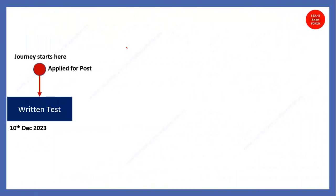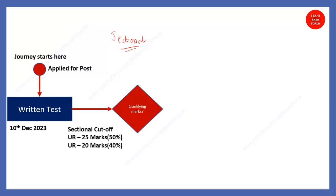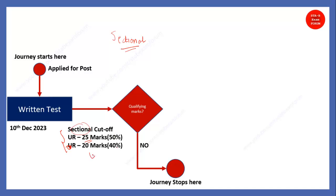Coming to the other question — whether there is a sectional cutoff or not. Yes, there is a sectional cutoff. You can refer to the advertisement as well. Section cutoff for unreserved category — and this is for reserved — each section you should get at least 25 marks. Some students have not attempted a section at all, so they are straight away not able to qualify — their journey stops there. Those who have attempted at least 40% for reserved and 50% for unreserved in each section can qualify. Sections are English, Quantitative Aptitude, Reasoning, and General Knowledge.